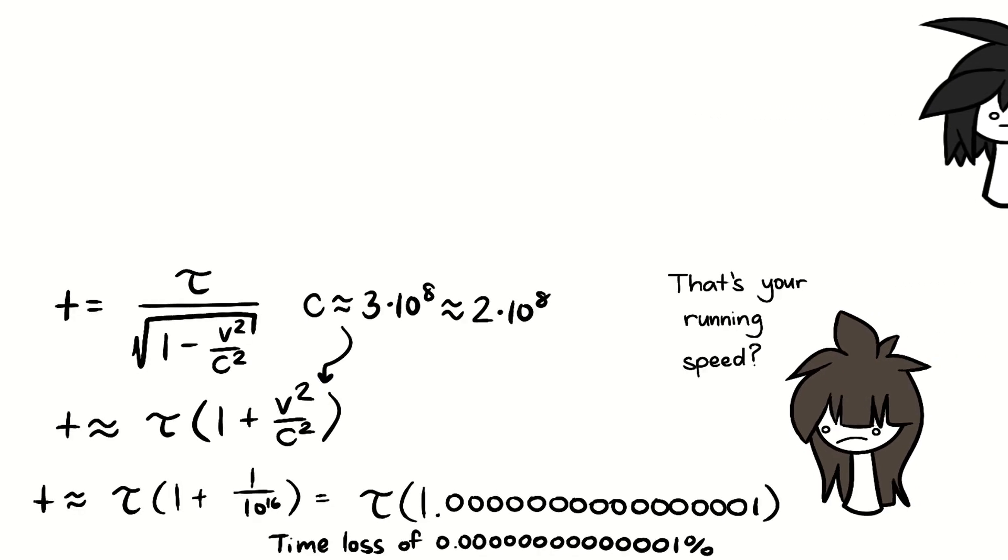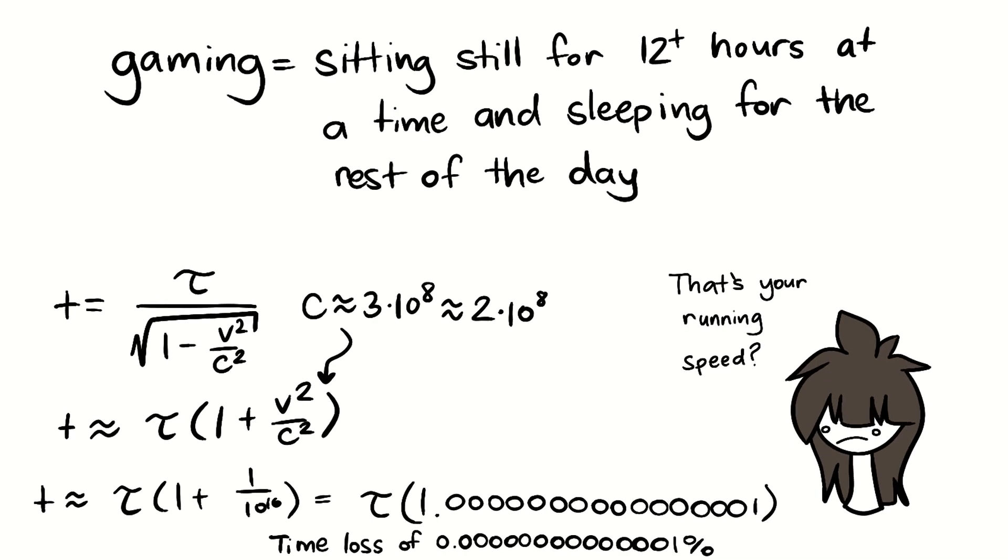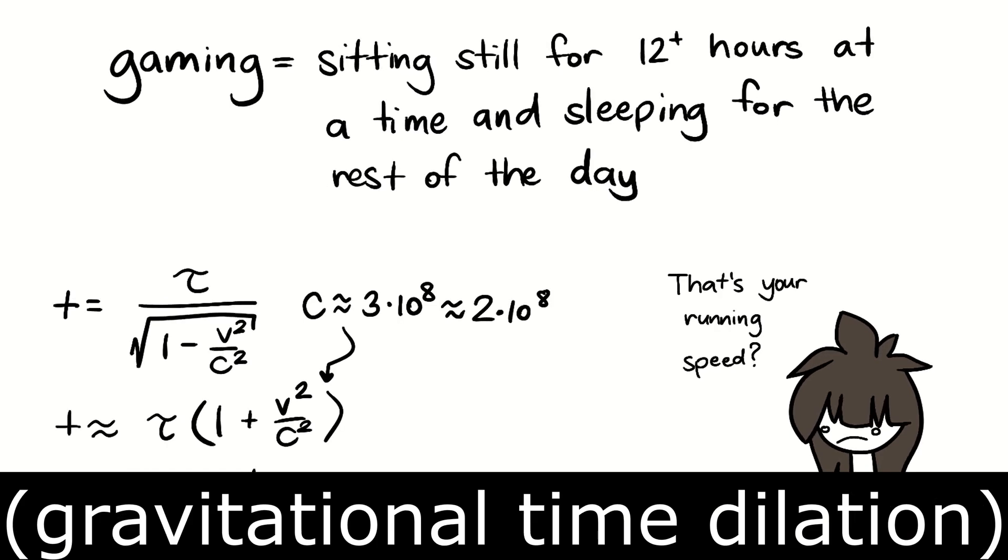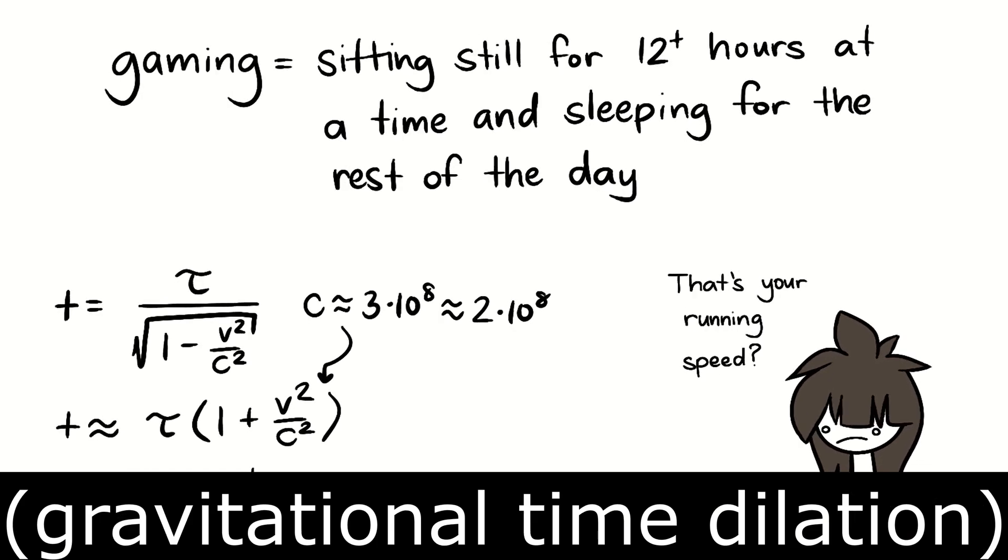So it turns out gaming 24/7 is already the optimal route to speedrunning one's life. And no, becoming an astronaut is not a realistic speedrun route.